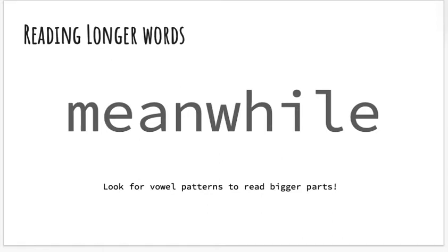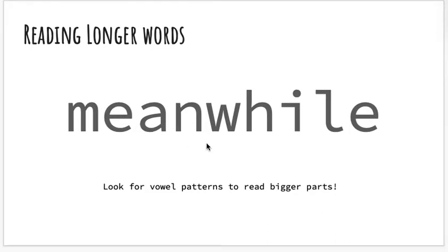That means we're looking for vowel patterns and we're no longer reading like we used to in kindergarten. In kindergarten, we used to do this: M, eh, n, w, ha, ah, l, eh. First of all, that wouldn't make sense because we know that there are vowel teams, and vowel teams change the sound that a letter makes. Also, that wouldn't be fast. If we're reading a book full of these words and we're going sound by sound, letter by letter, it'll take us forever.